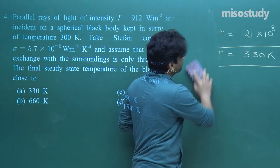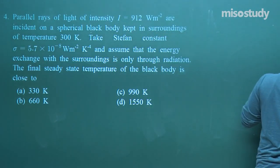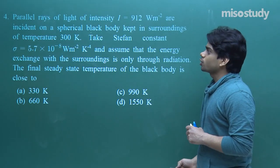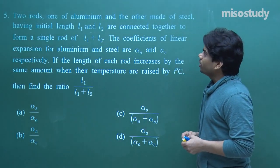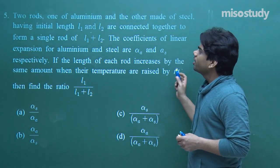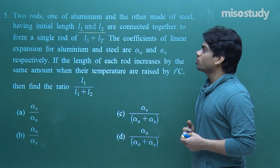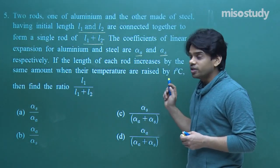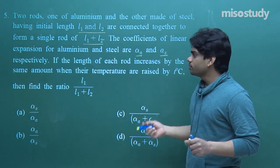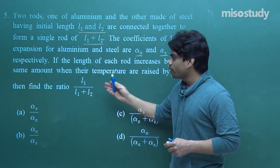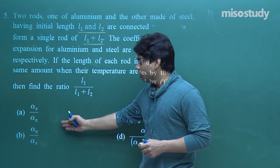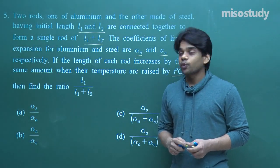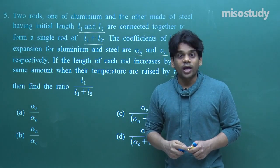We will proceed with the next question. Question number 5: two rods, one of aluminum and one of steel, having initial lengths L1 and L2, are connected to form a single rod of length L1 plus L2. The coefficient of linear expansion for aluminum and steel are alpha_A and alpha_S respectively. If the length of each rod increases by the same amount when temperature is raised by T°C, find the ratio L1/(L1 + L2). Options: A) alpha_S/alpha_A, B) alpha_A/alpha_S, C) alpha_S/(alpha_A + alpha_S), D) alpha_A/(alpha_A + alpha_S).